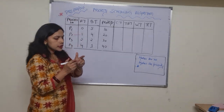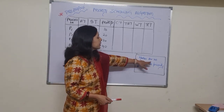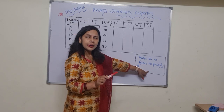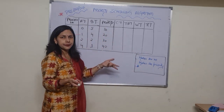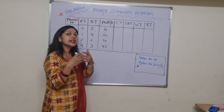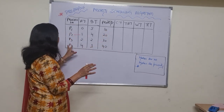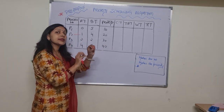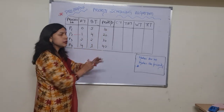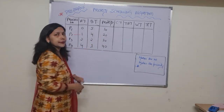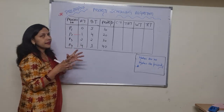One important point to note: higher the number, higher the priority. So if your number is larger, your priority is greater. In this example, P4 has the highest priority and P1 has the lowest priority, because P1's number is the lowest, that is 10.